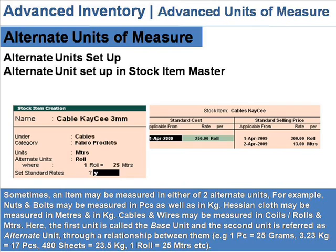Cables and wires may be measured in coils, rolls, and meters. Here the first unit is called the base unit and the second unit is referred to as the alternate unit, with a relationship between them. For example, one piece is equal to 25 grams, 2.23 kg is equal to 17 pieces, 400 sheets is equal to 23.5 kg, and one roll is equal to 25 meters.